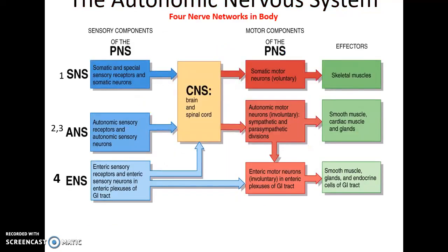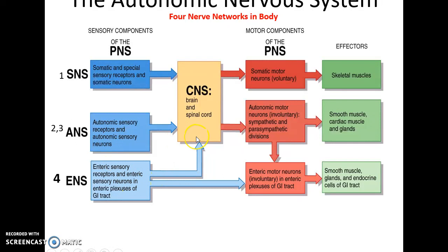There are four nerve networks in the body. The somatic nervous system handles sensations we are consciously aware of, including special senses like vision and touch, and allows voluntary control of skeletal muscles. The autonomic nervous system includes sensory receptors that collect information we are not aware of, sending it to the central nervous system, which then involuntarily controls smooth muscle, cardiac muscle, and glands. Finally, the enteric nervous system is dedicated to the gastrointestinal tract and does not necessarily need to communicate with the central nervous system, though it is influenced by it through the autonomic nervous system.